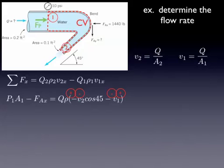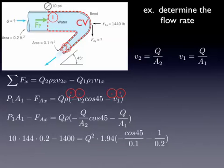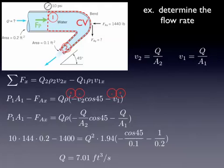We need to solve for flow rate, and the equation is given in terms of velocities, so we have to get rid of those velocities. I'm going to substitute those velocities for Q over A and then solve for Q. Now we have all the other numbers we need to solve this. We've just plugged them in and solved for Q, and Q works out to be around 7 cubic feet per second.